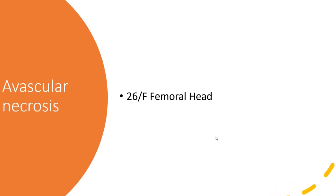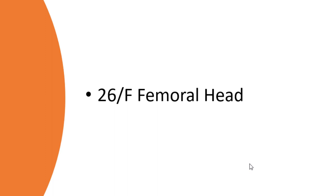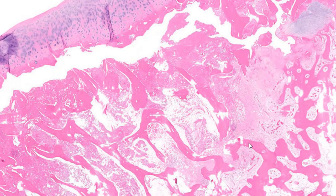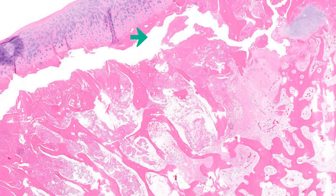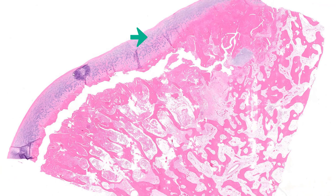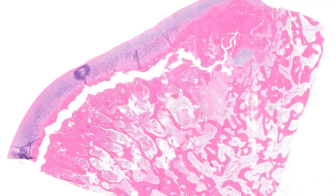Here's another case. This is a much younger woman, but again notice very similar features — those three layers. The top layer: the living cartilage. The subchondral bone is dead, and there's a crack between the subchondral bone and the rest of the bone right there. Then there's the interface, which is partially living and partially dead. And finally, the fourth layer, which is completely alive. Also notice this fibrocartilage, which is a healing response to the avascular necrosis.